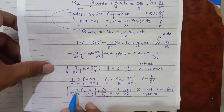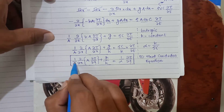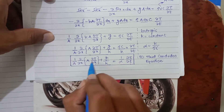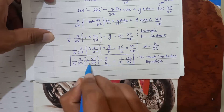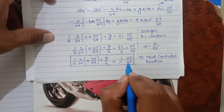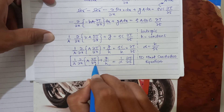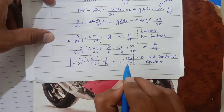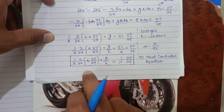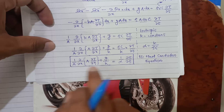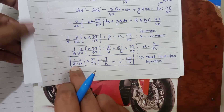Hello everyone. In the previous lecture we discussed the derivation of the 1D heat conduction equation. The equation is: 1/A · ∂/∂x(A · ∂T/∂x) + g/k = 1/α · ∂T/∂t. Here we use partial differentiation because temperature varies both with location and with time, making this an unsteady heat conduction equation in one dimension. We need to modify this equation for particular cases where area is the most important parameter.